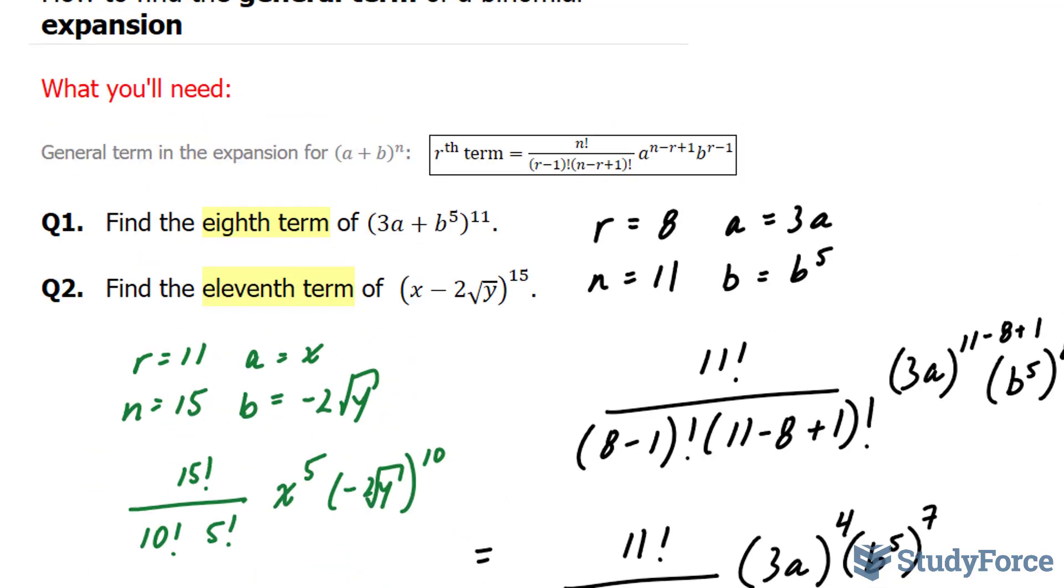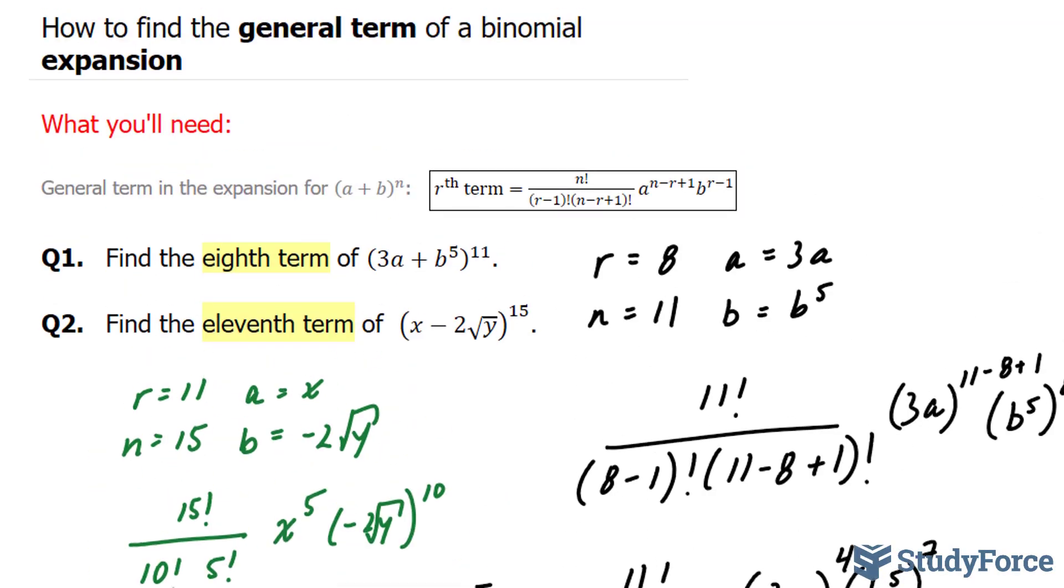And there you have it. Two examples on how to find the general term of a binomial expansion.